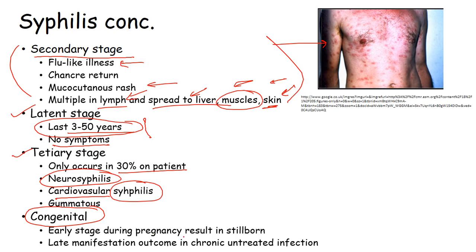There is also congenital syphilis, which occurs early during pregnancy and results in the newborn being infected. As newborns come out through the vaginal area, if the mother carries the infective agents, those may be passed to the newborn infant, and the newborn will get the infection.